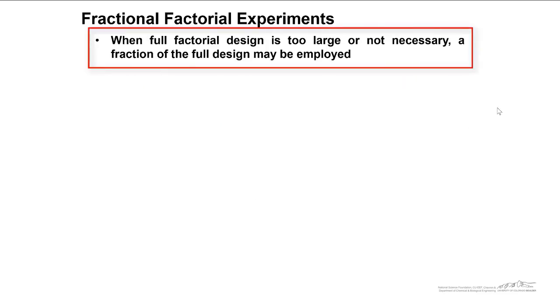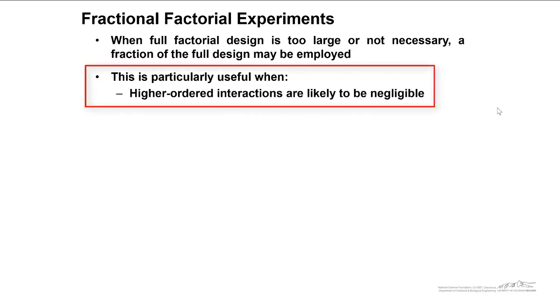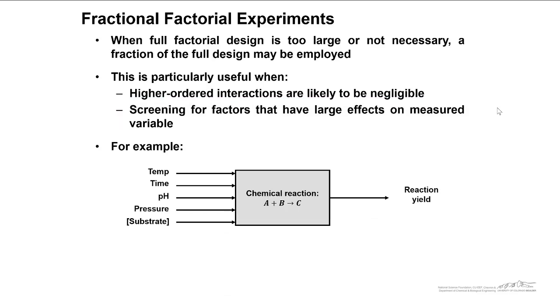Fractional factorial experiments are important when full factorial designs are too large or are not necessary. So if this is the case, a fraction of the full design may be employed. This is particularly useful when we have higher order interactions that are likely to be negligible, when we are screening for factors that have large effect on the measured variable. In particular, this is used early on when you're trying to screen through the important factors.